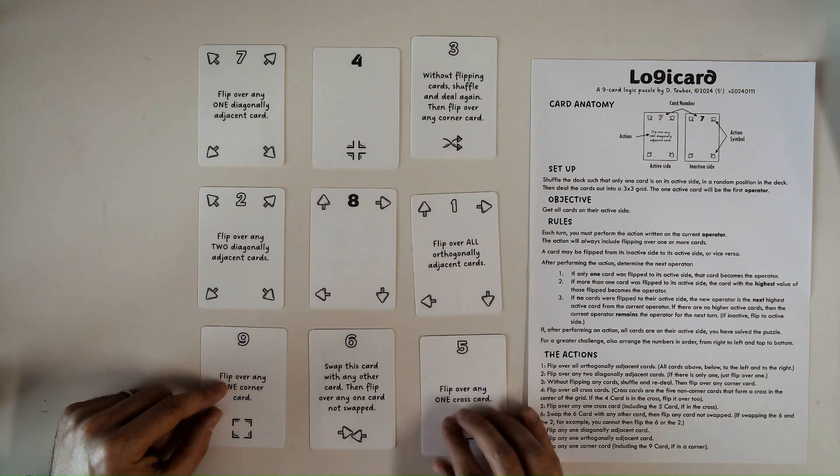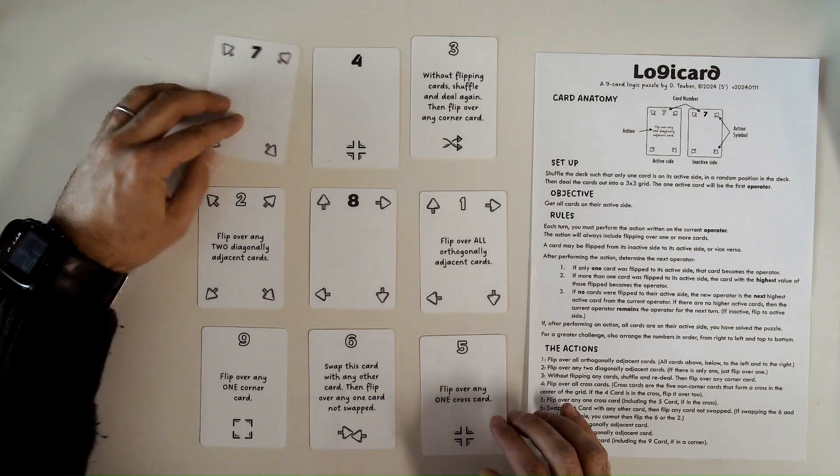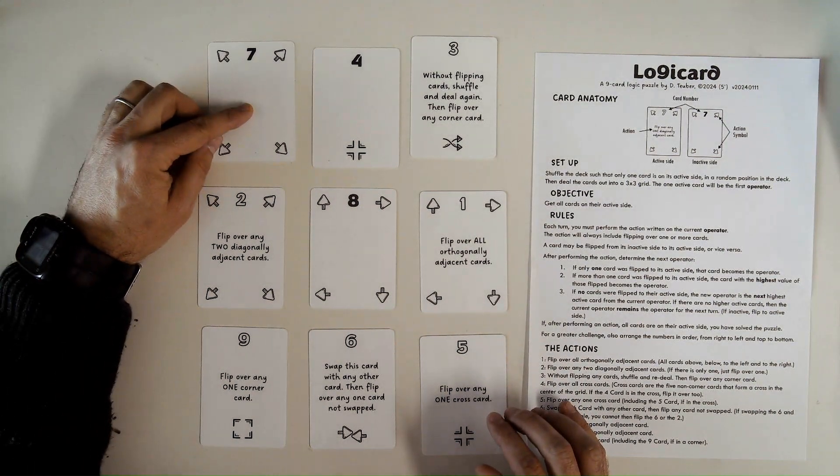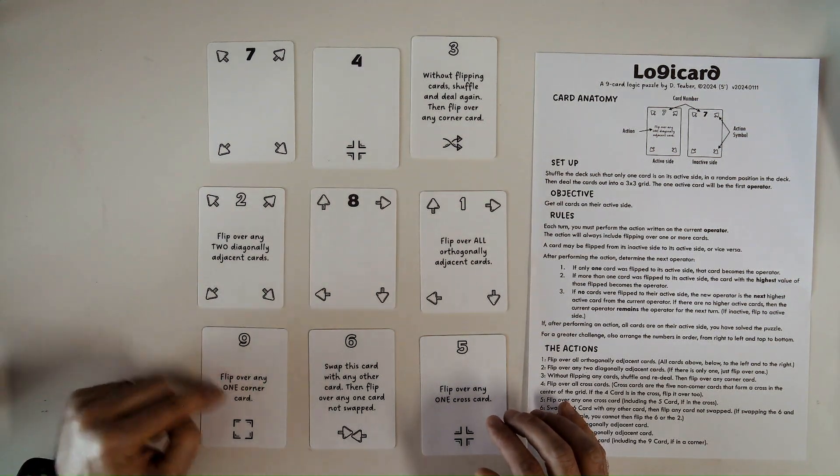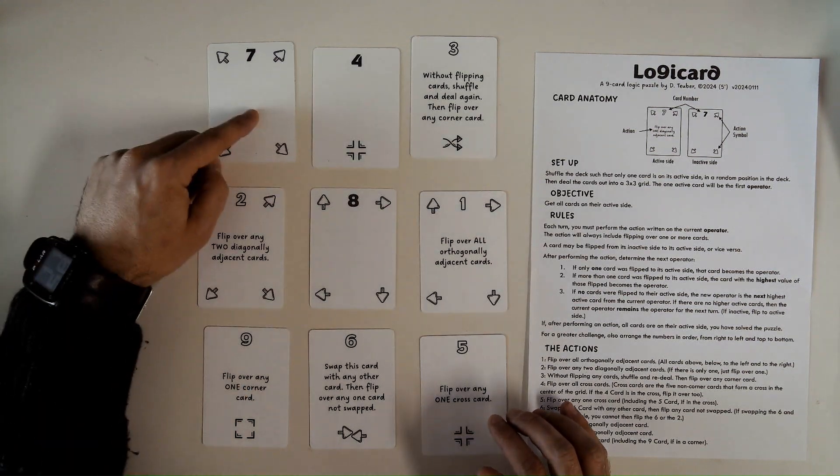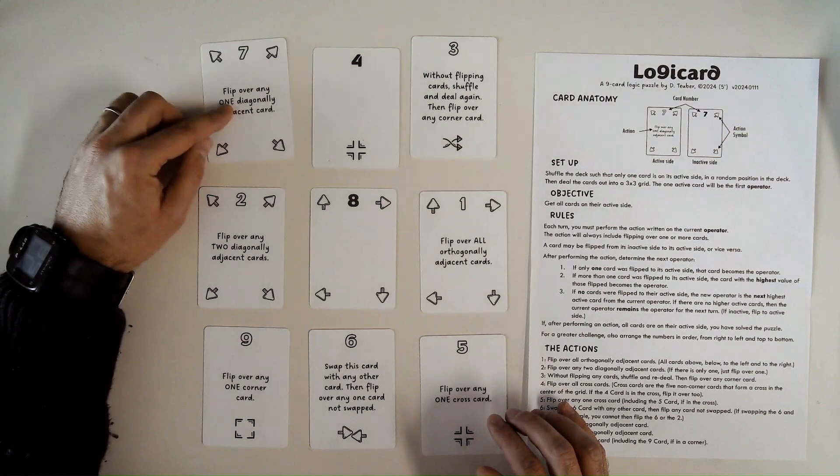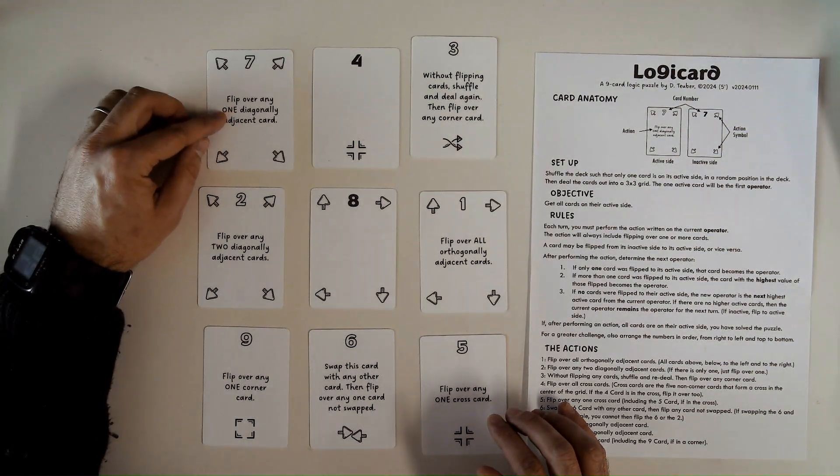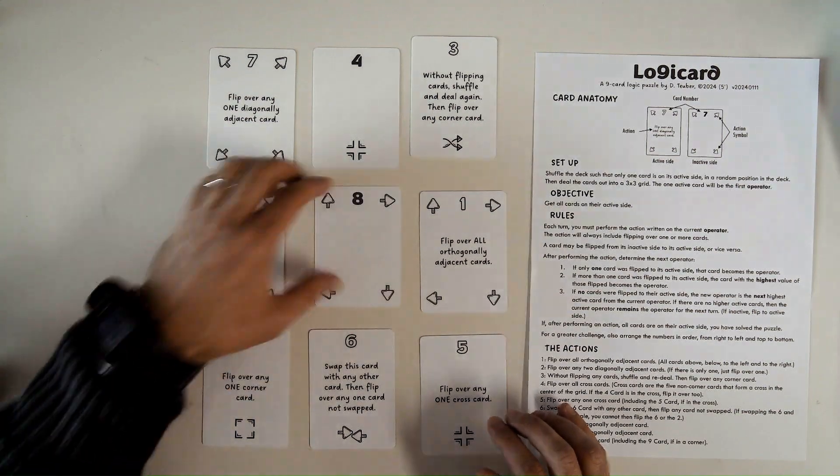So now I can flip over any one corner card. I think I can solve this. So I'm going to flip over the 7, which is a corner card. It's inactive. The 9 is the highest card. There's no higher card than that. So this remains the operator. And I can flip over any corner card again. I can flip the 7 back. Now the 7 is the operator because I flipped it to its active side. I can flip over any one diagonally adjacent card. It's the 8.